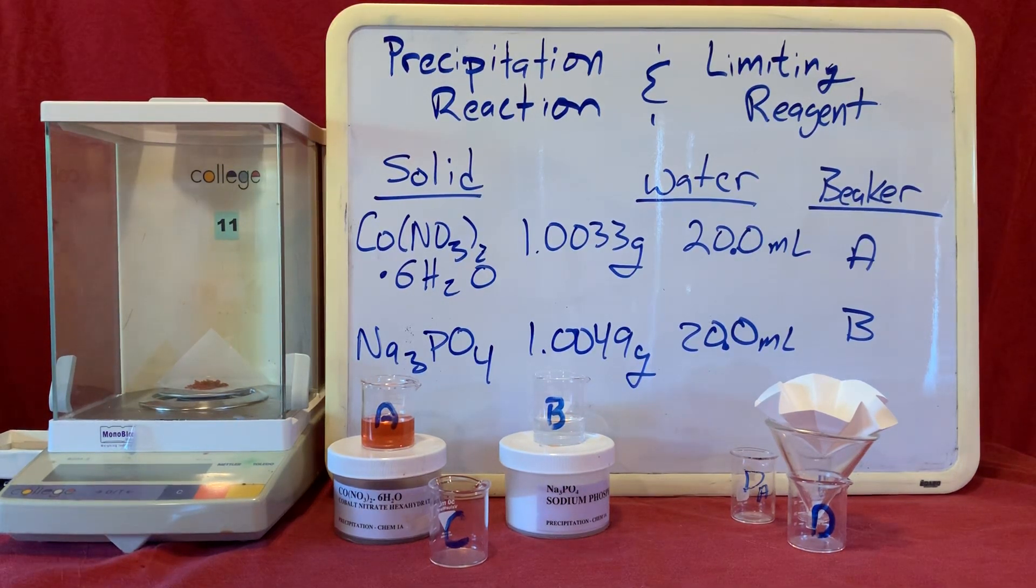In this video we'll look at part 1 of the precipitation reaction and limiting reagent lab. In this part we're going to make two solutions, solution A and solution B.